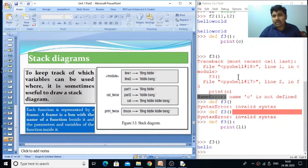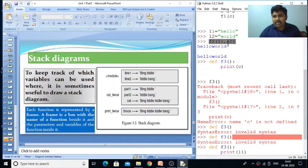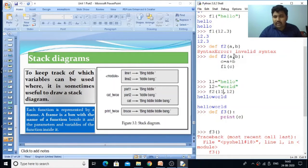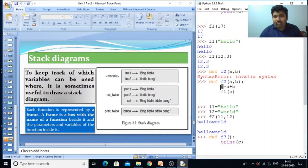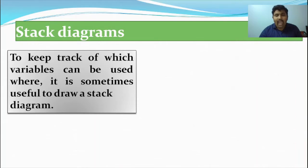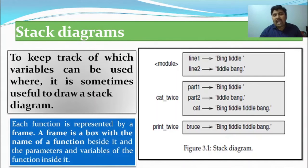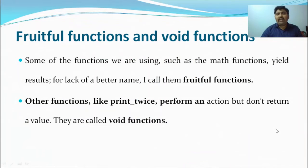With respect to our program, for the f2 function: a contains 'hello', b contains 'world', and c contains 'hello world'. In the module frame, l1 is 'hello' and l2 is 'world'. So the purpose of a stack diagram is to represent what variables a function has and the corresponding values of each variable — entire functions represented simply using a stack diagram, where each function has a frame.